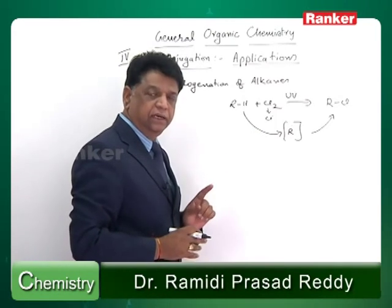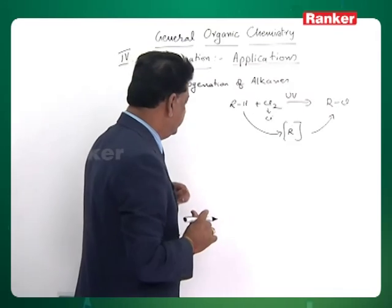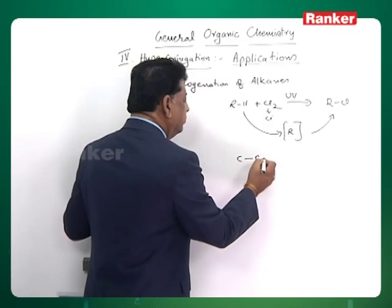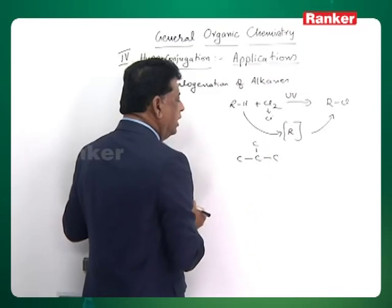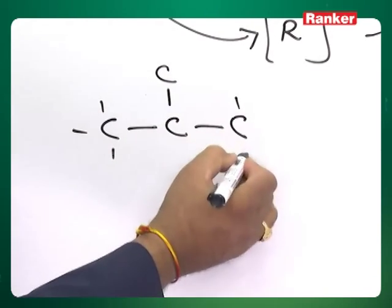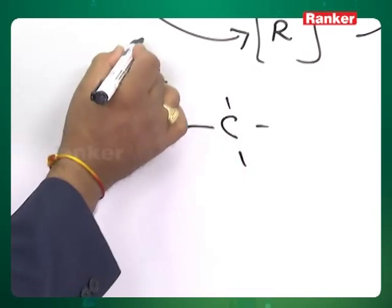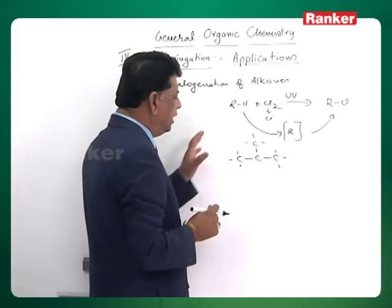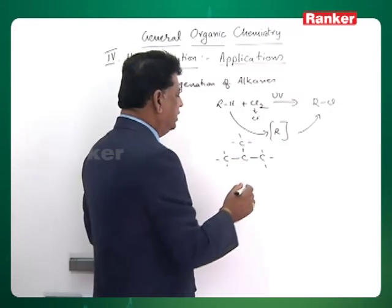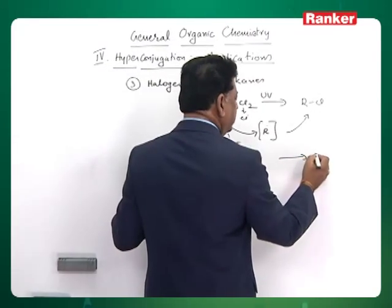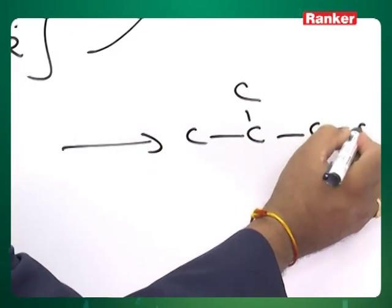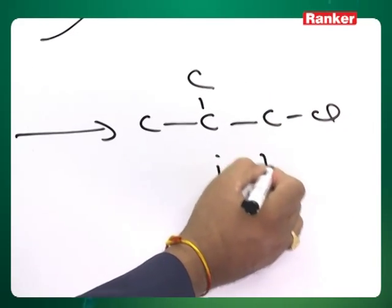The free radical, as I said, shows hyperconjugation. Now, for a compound like isobutane, it has three hydrogens, three hydrogens, three hydrogens — these nine hydrogens are identical. Any one of these hydrogens, if you halogenate it, you will get the same product, that is isobutyl chloride.